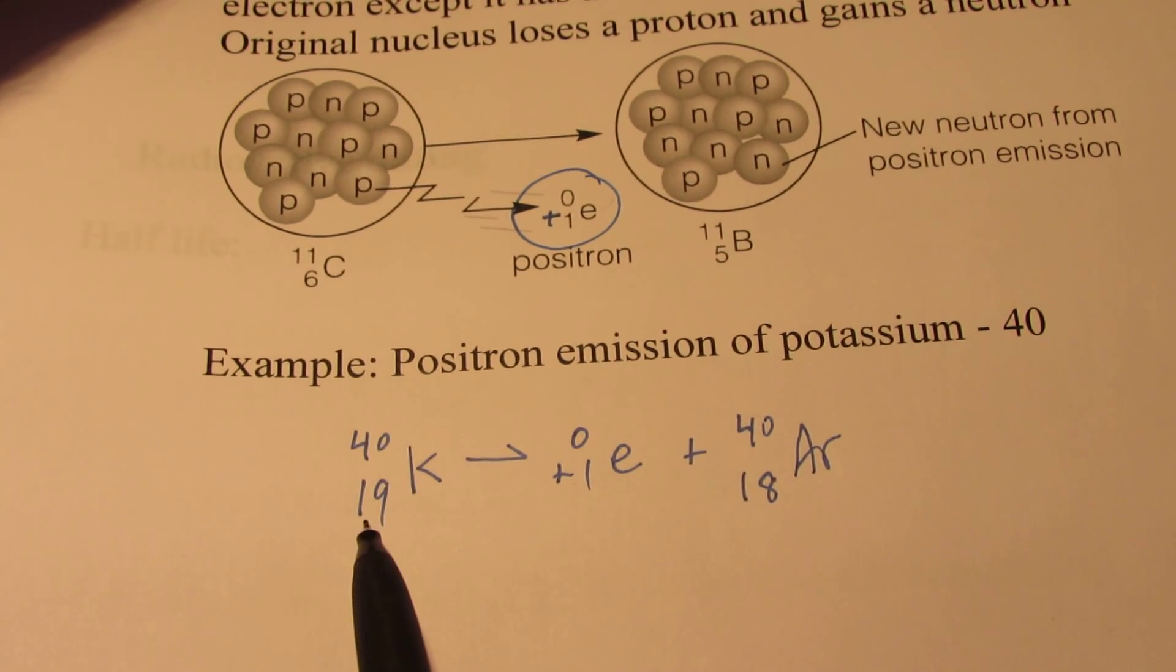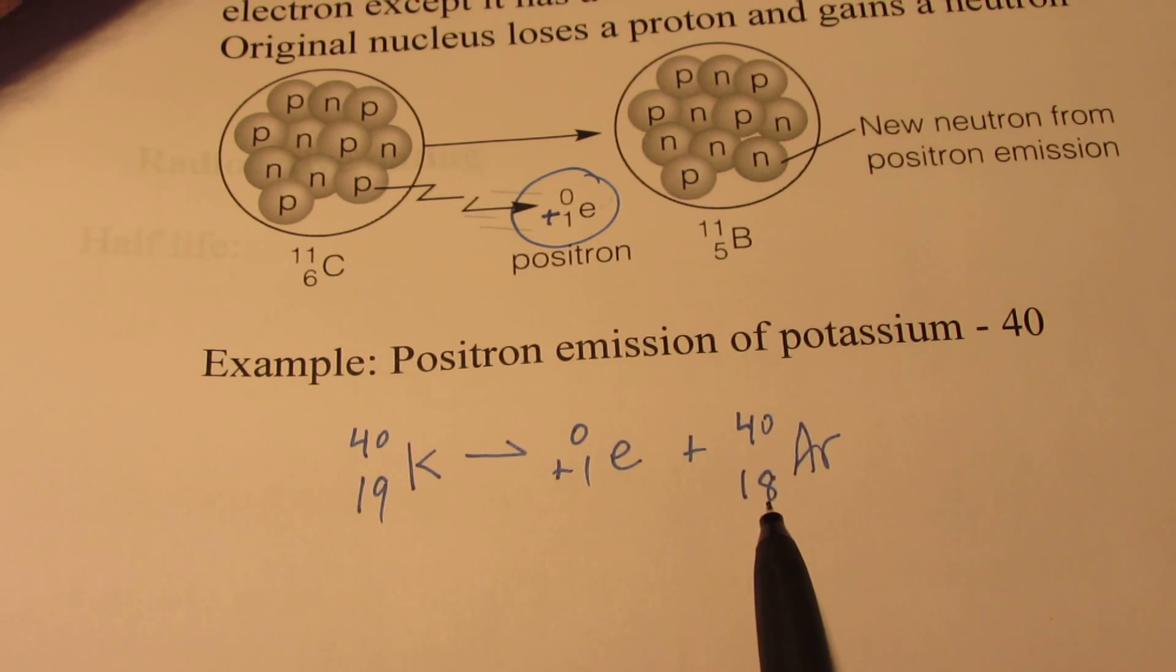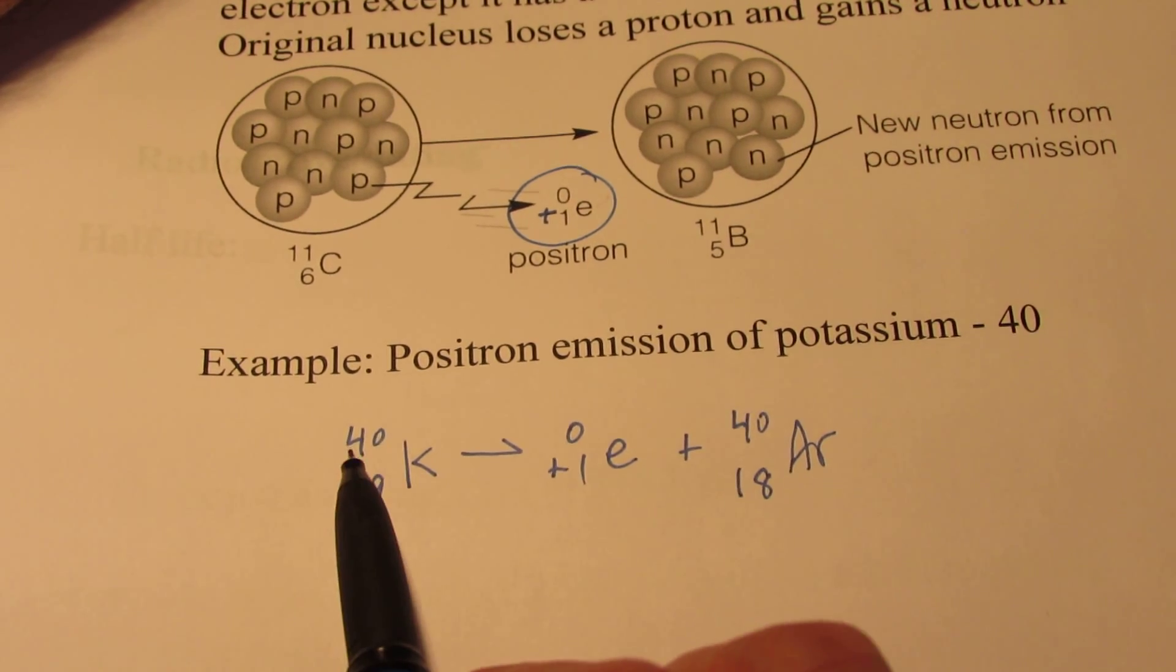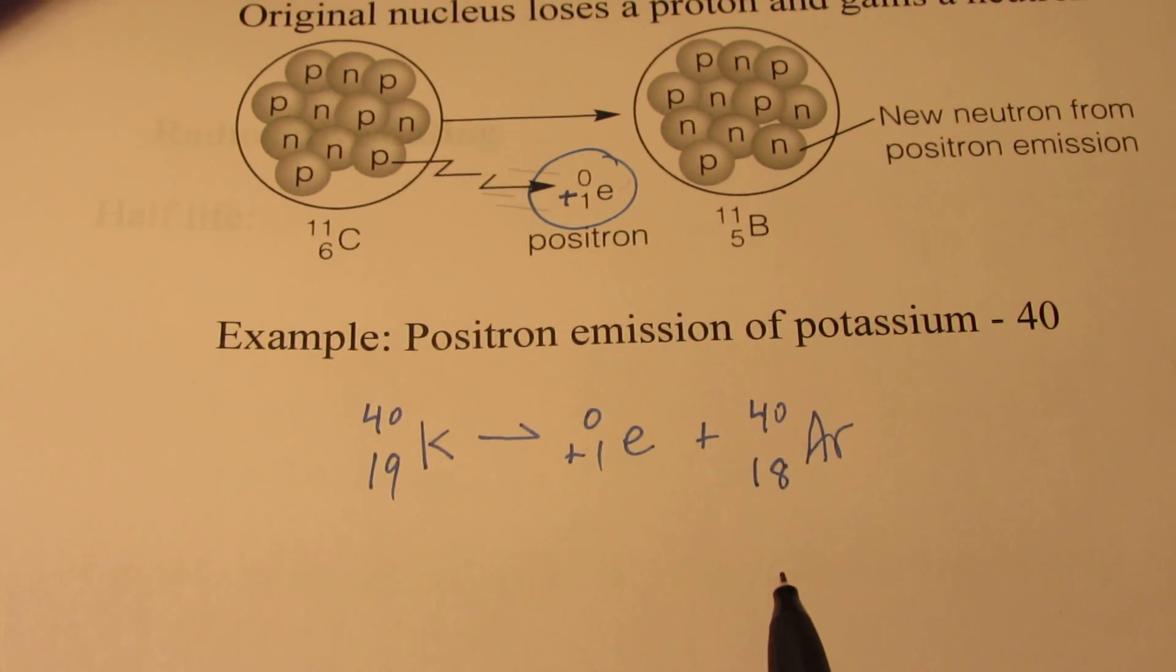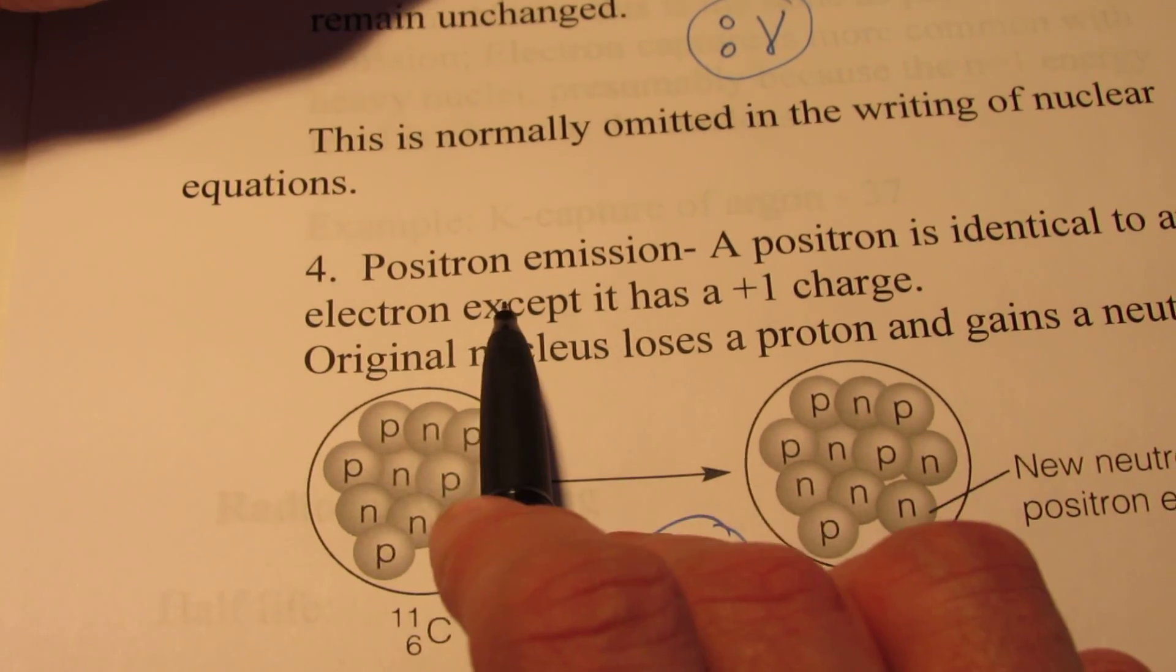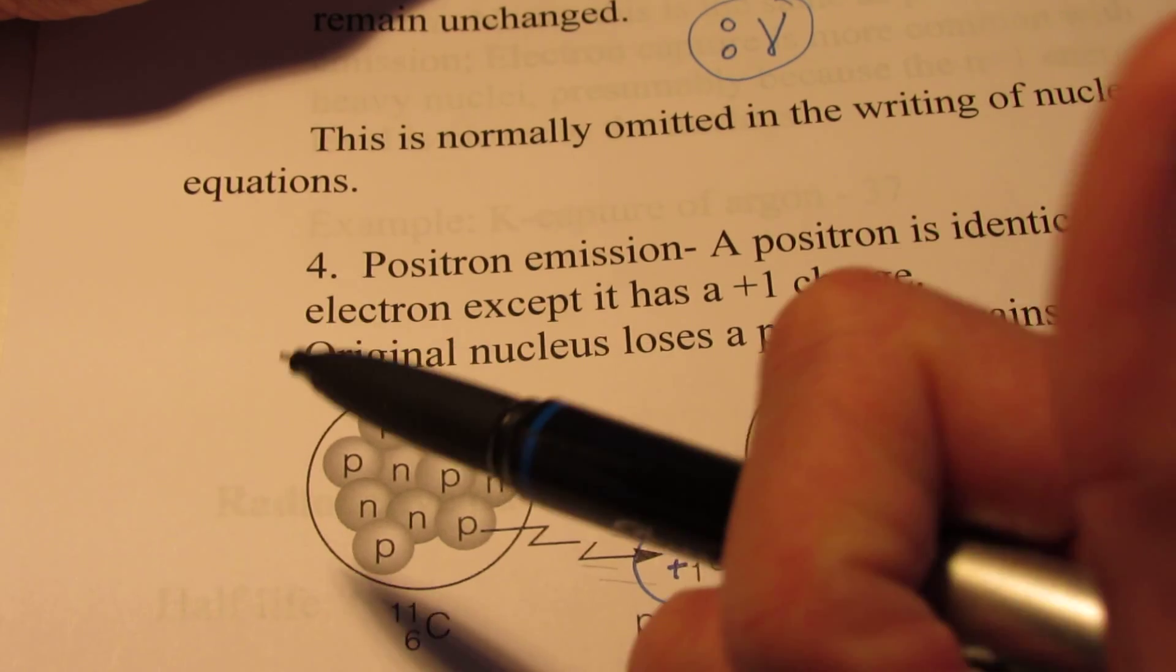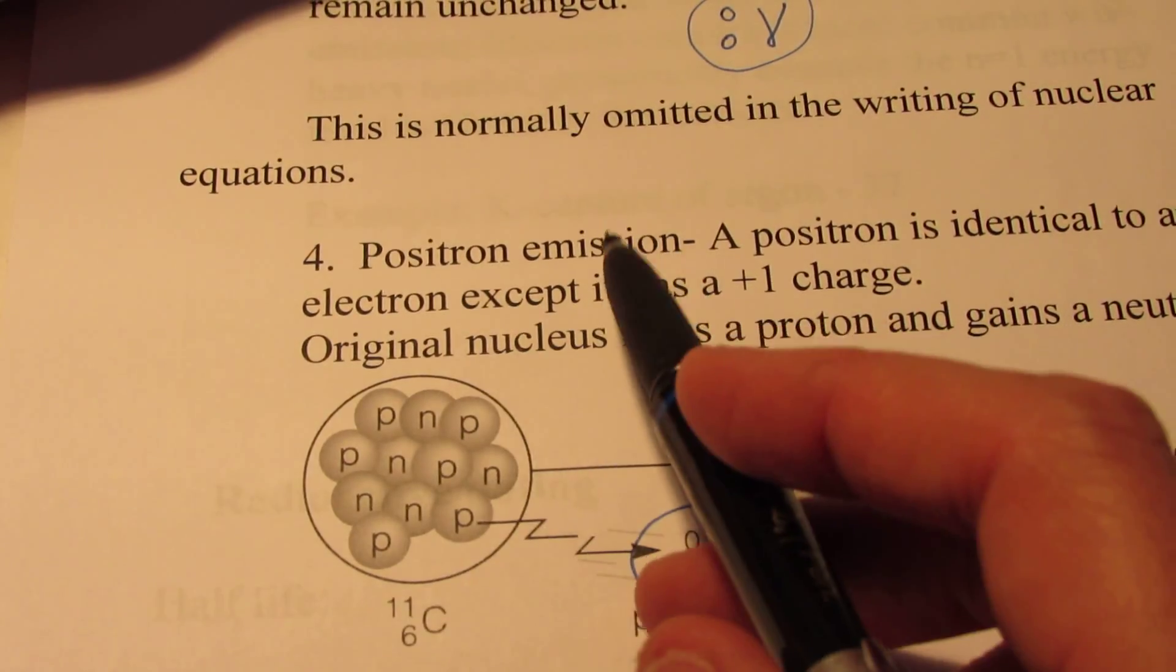Once again, let's check the math. 19 for the atomic number on the left. 1 and 18 equal 19 on the right. 40 for a mass number on the left. 0 plus 40 is the mass number on the right. So there's positron emission. It's unusual, we don't see that very often. We normally will see alpha and we will see beta, and we will talk about gamma emission. Every once in a while positron emission comes up.